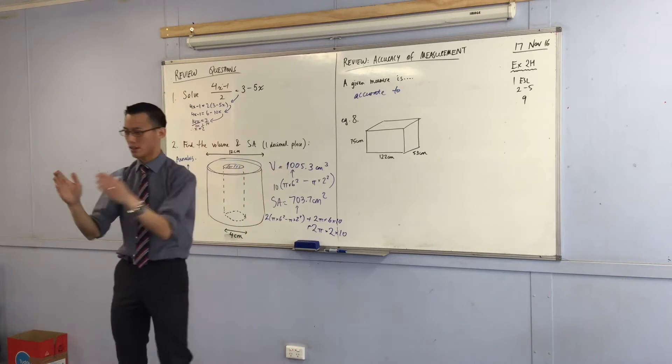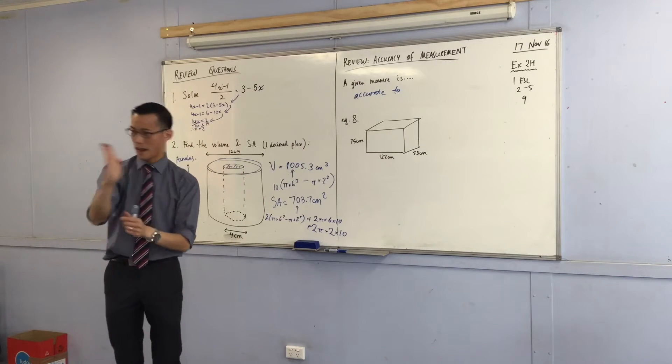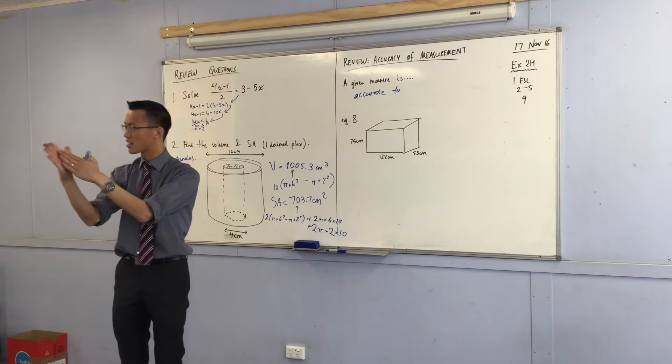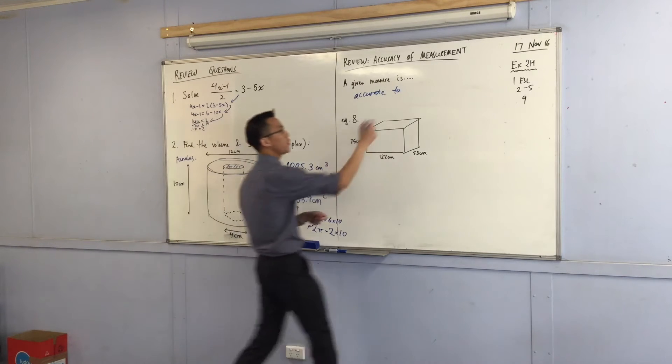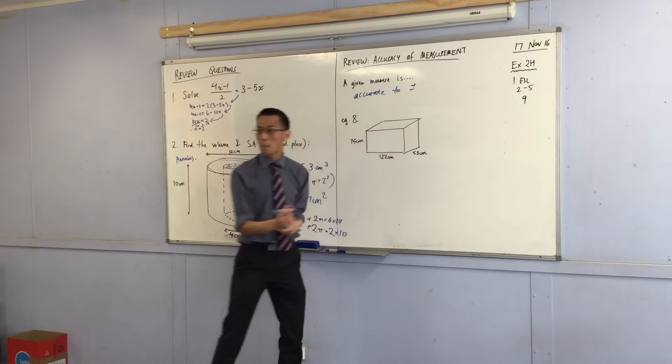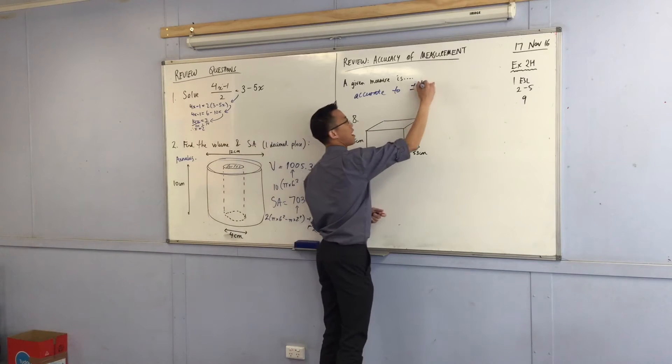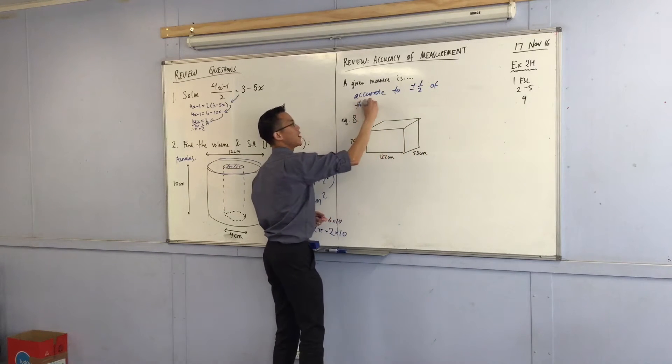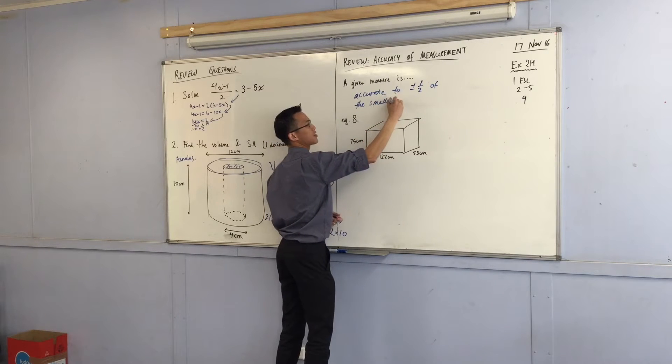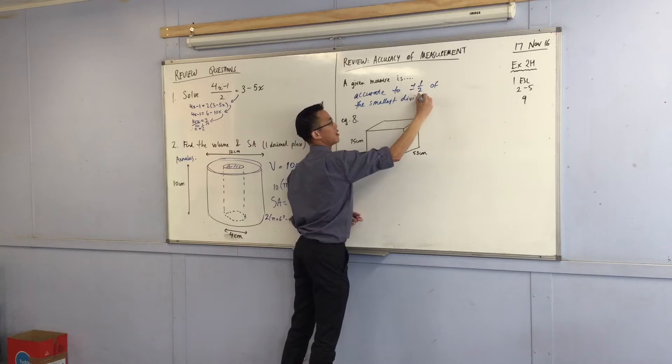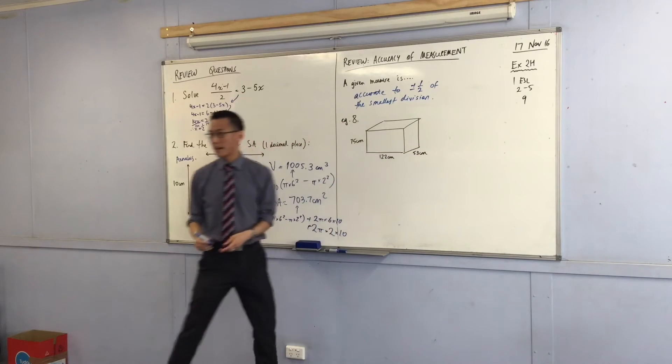You'd go a half a centimeter, right, because if you're measuring something and it's not quite on the dot, you can generally say it's closer to one or the other. So we would say it's accurate to plus or minus a half of the smallest division, which in the case I just mentioned was a centimeter.